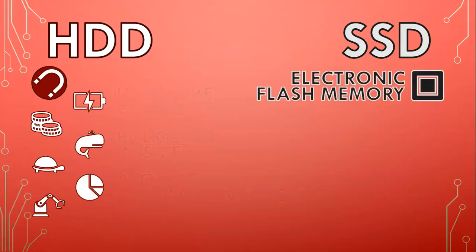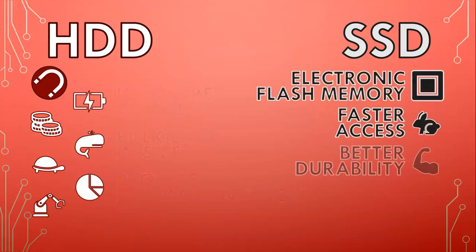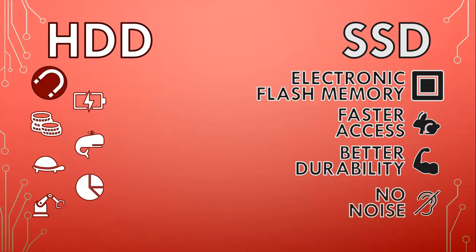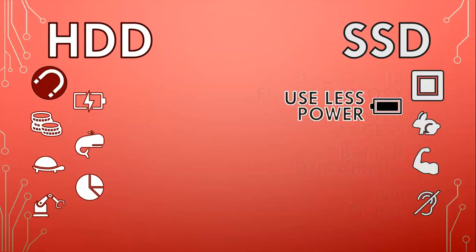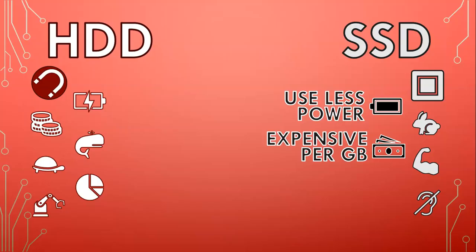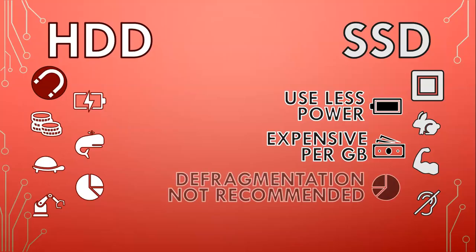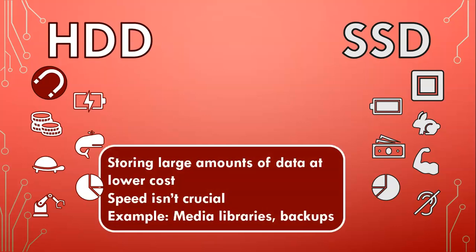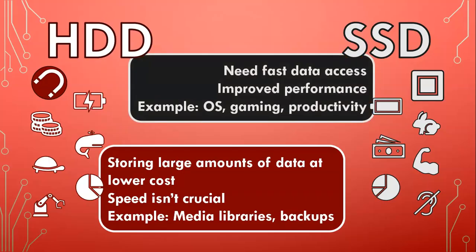Solid state drives use electronic flash memory, offering faster data access and quicker boot times, better durability, no noise, and lower power consumption, though they are more expensive per gigabyte. SSDs do not require defragmentation. Hard drives are better for storing large amounts of data at a lower cost when speed isn't crucial, such as storing media libraries or backups. Solid state drives are ideal for tasks that demand fast data access and improved performance, such as running operating systems, gaming, and productivity applications.